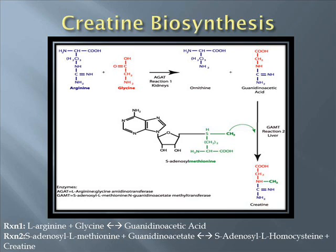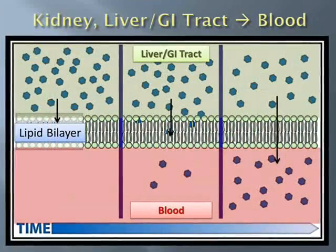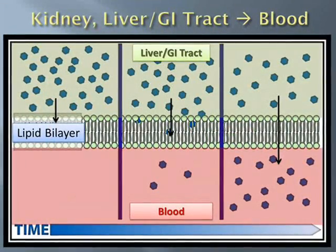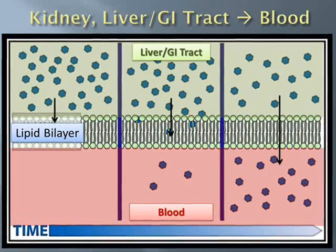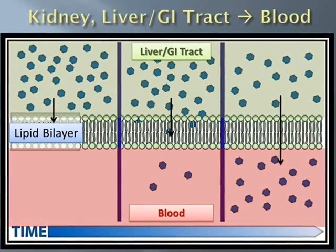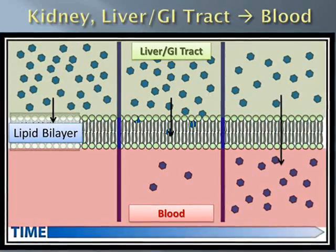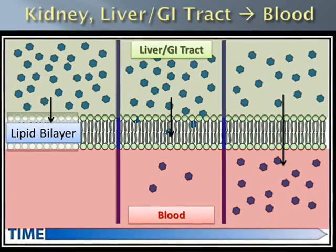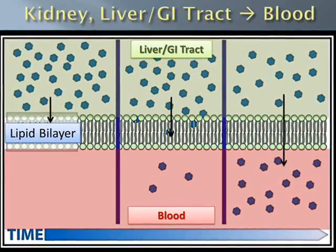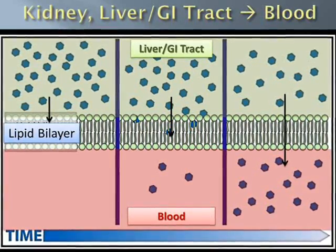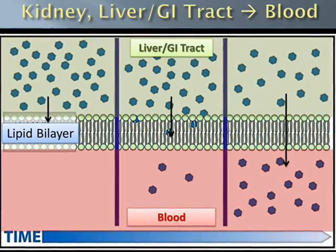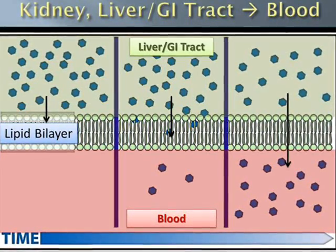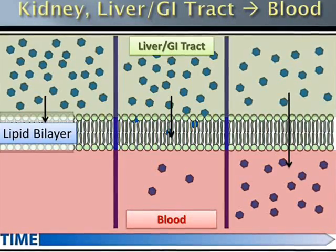After the formation of creatine in the liver, or the consumption of a creatine-containing food source, creatine travels to the bloodstream via simple diffusion down its concentration gradient — from a high concentration in the liver or intestines through the phospholipid bilayer to a lower concentration in the bloodstream. Here it can be transported to cells throughout the body for storage and energy production.